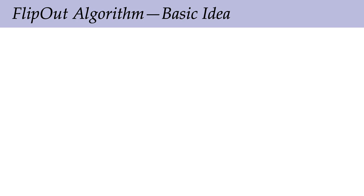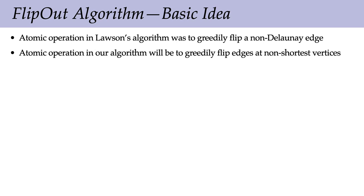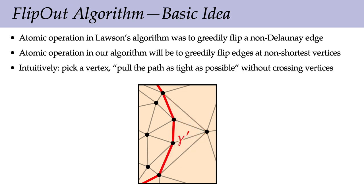So given this is what we want to find, how do we actually compute it? We're going to take a greedy approach. In Lawson's algorithm for finding a Delaunay triangulation, the atomic operation was to greedily flip a non-Delaunay edge. The atomic operation in our algorithm will be to greedily flip edges at non-shortest vertices — at vertices where the curve can be tightened. Intuitively we pick a vertex and pull the path as tight as possible without crossing any other vertices. We do this by flipping edges in the little blue wedge next to the vertex until we can just slide this red curve over by an isotopy, which also gives us the isotopic property of the algorithm.